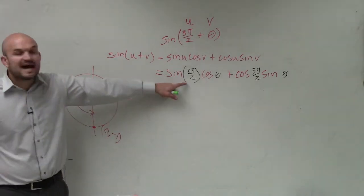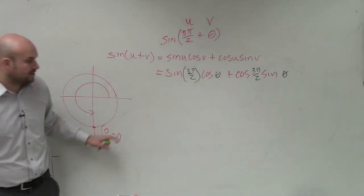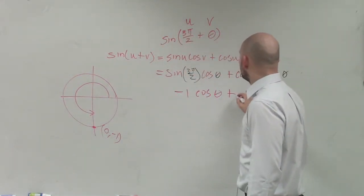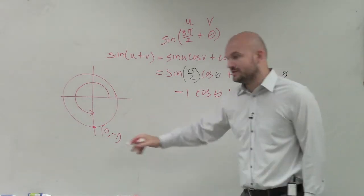So if I want to evaluate the sine of that, the sine is the y coordinate, which is negative 1, times cosine of θ, which we can evaluate, plus cosine of that point is 0.